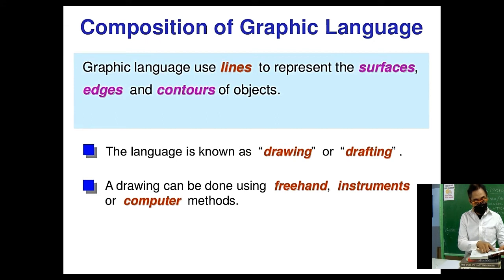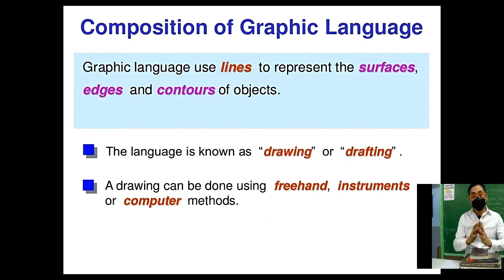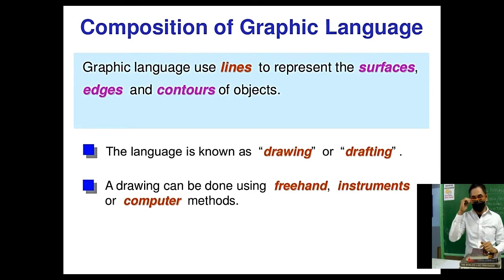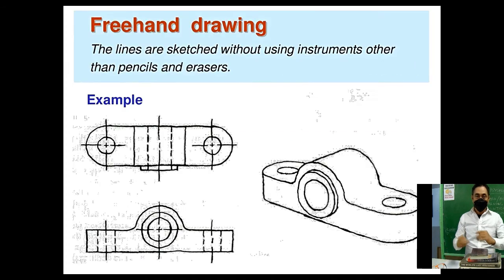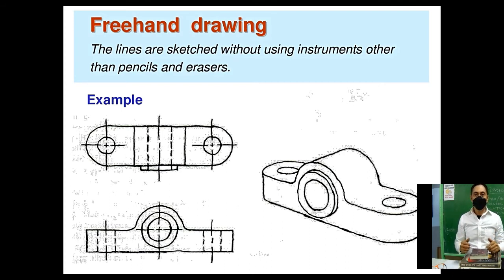Composition of Graphic Language: graphics use lines to represent surfaces, edges, and contours of objects. This language is known as drawing or drafting. A drawing can be done using freehand, instruments, or computer methods. In freehand drawing, lines are sketched without using any instrument other than pencils and erasers.